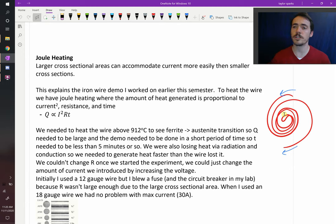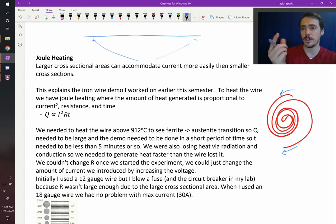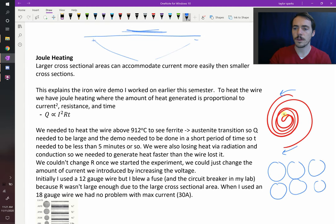You actually saw this earlier in the semester if you watched my iron wire demo. I hooked the power source up to this iron wire and applied an alternating current, which caused the electrons to move back and forth through the wire. As those electrons were jostling back and forth, they're undergoing collision events, crashing into atoms in the crystal structure, imparting kinetic energy to them. That's going to cause your material to heat up. This is joule heating.